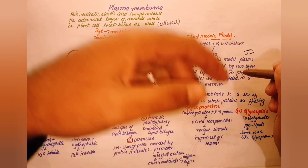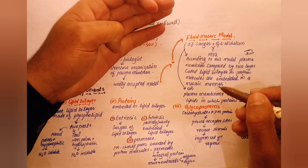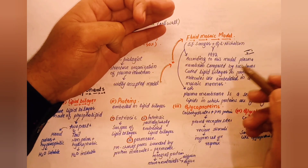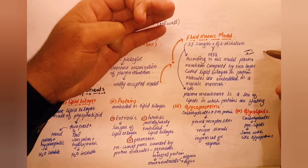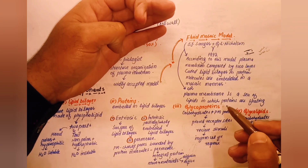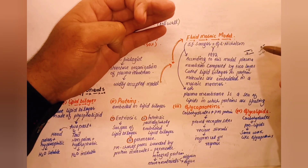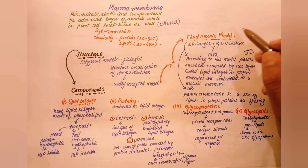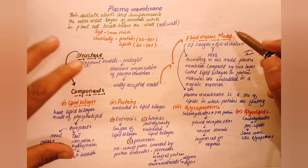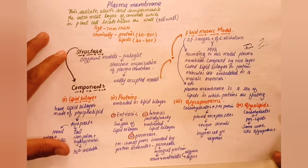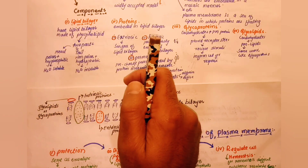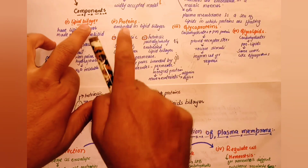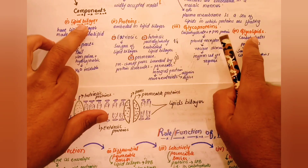The plasma membrane is made of lipids, and protein molecules float within this lipid layer — this is the basis of the fluid mosaic model by Singer and Nicolson. The components of the plasma membrane include lipid bilayer, protein, glycoprotein, and glycolipids.